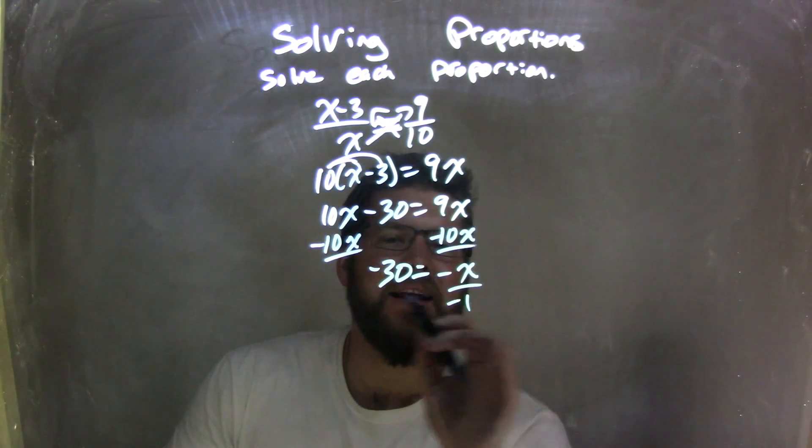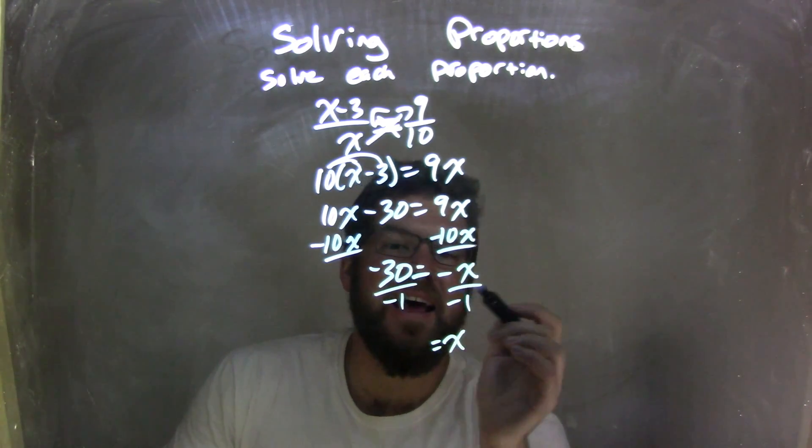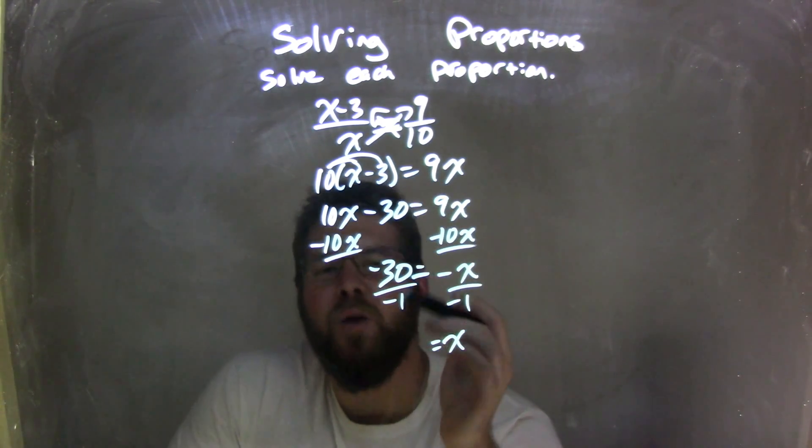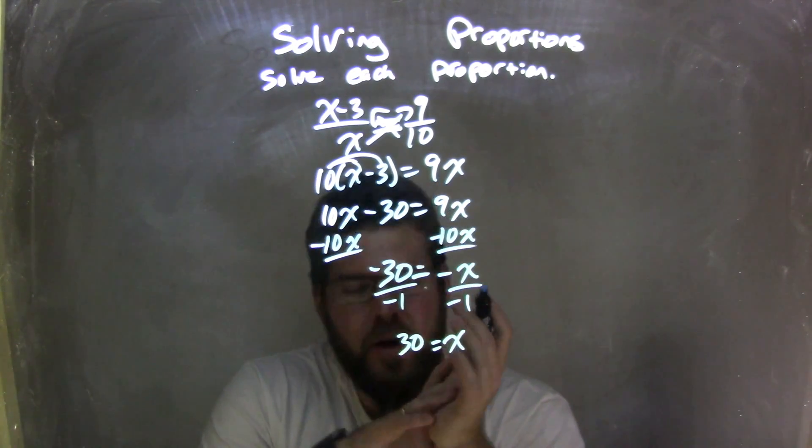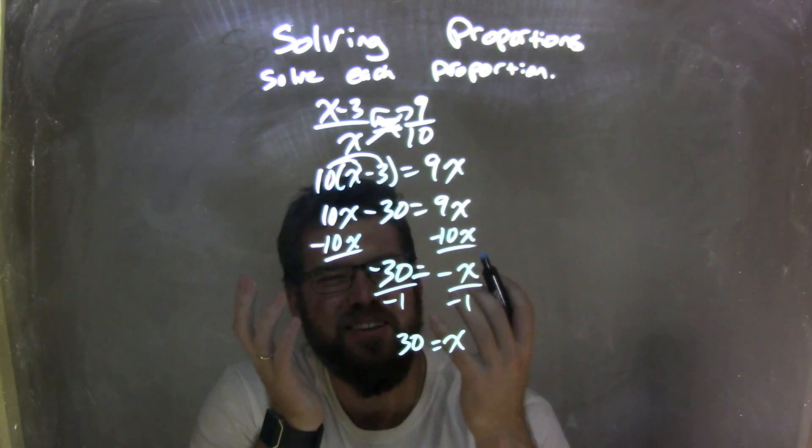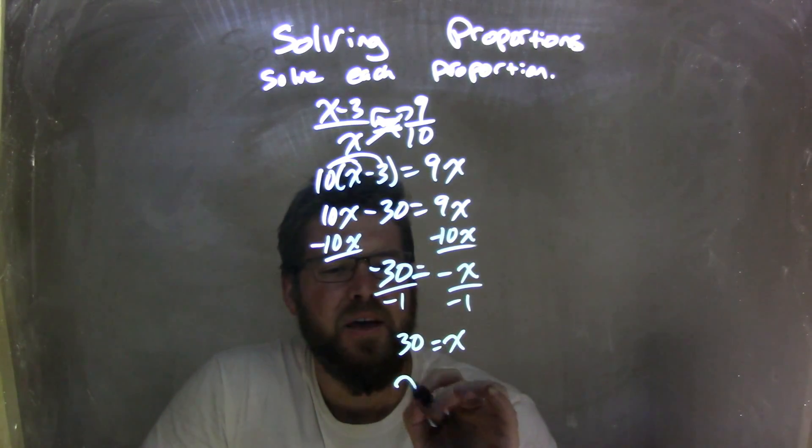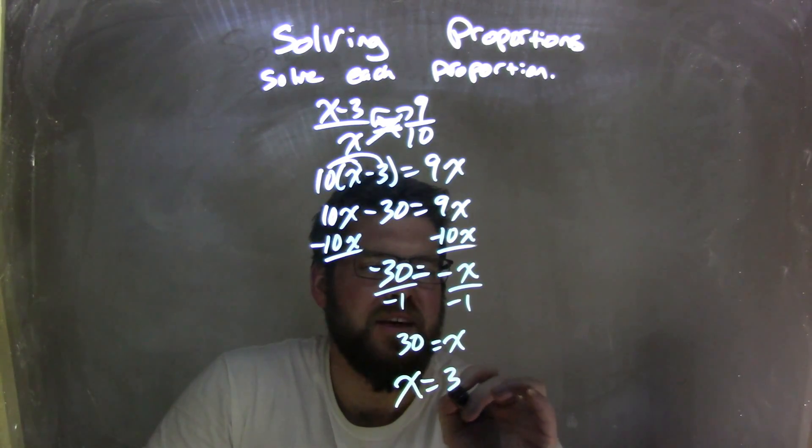I then want to divide by negative 1 on both sides, leaving me with an x on the right, and negative 30 divided by negative 1, which is positive 30 on the left. Now, if you know my videos, we need to rearrange this so that x comes first, because that looks nice and neat. So, my final answer is x equals 30.